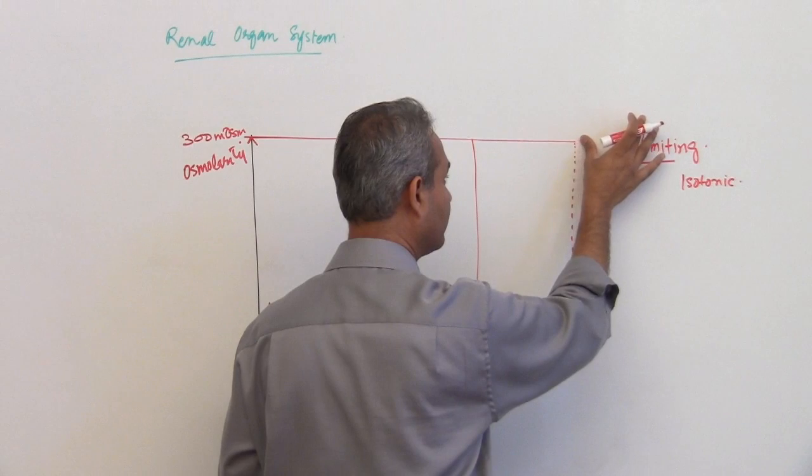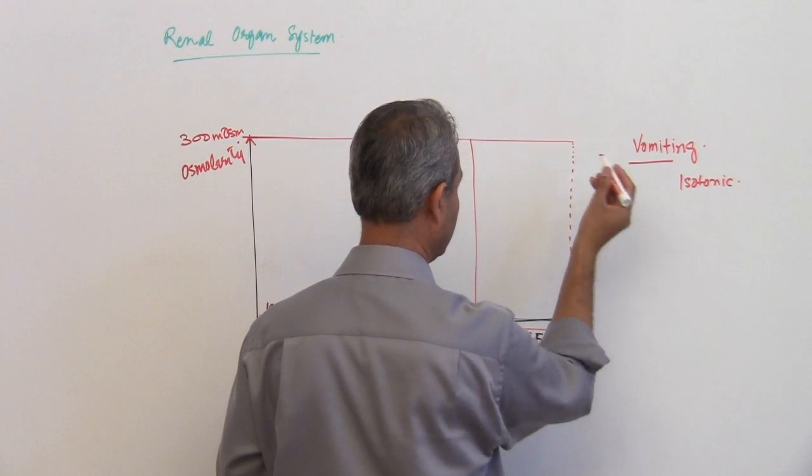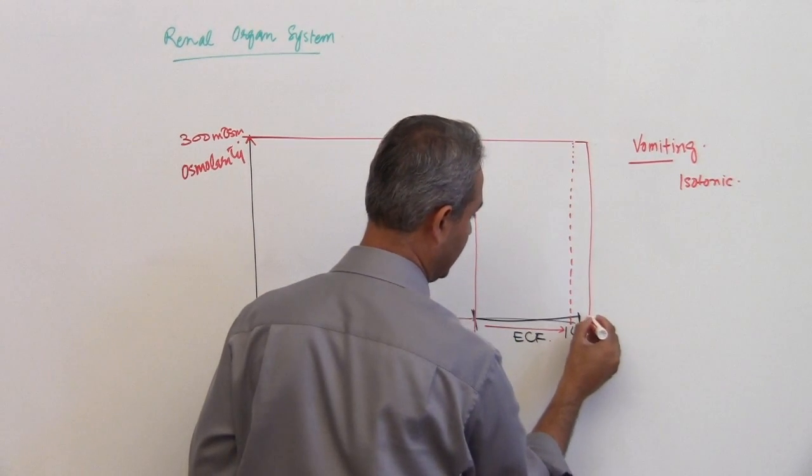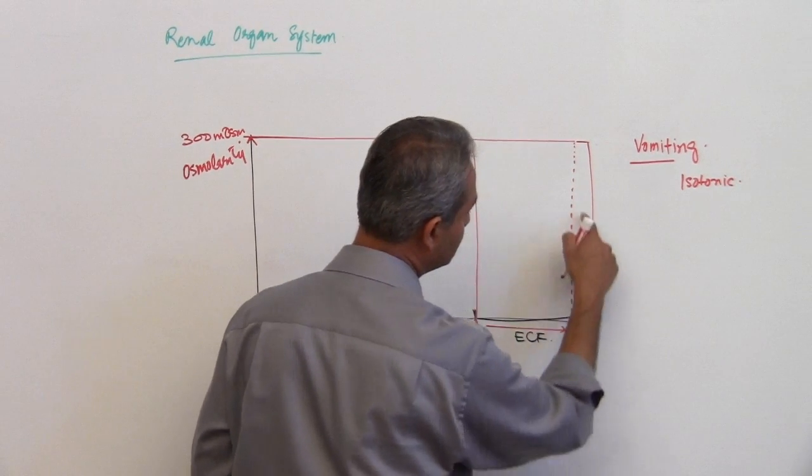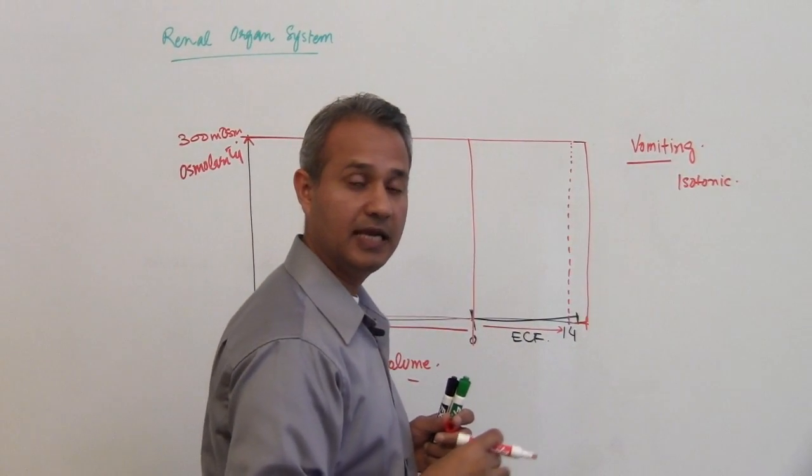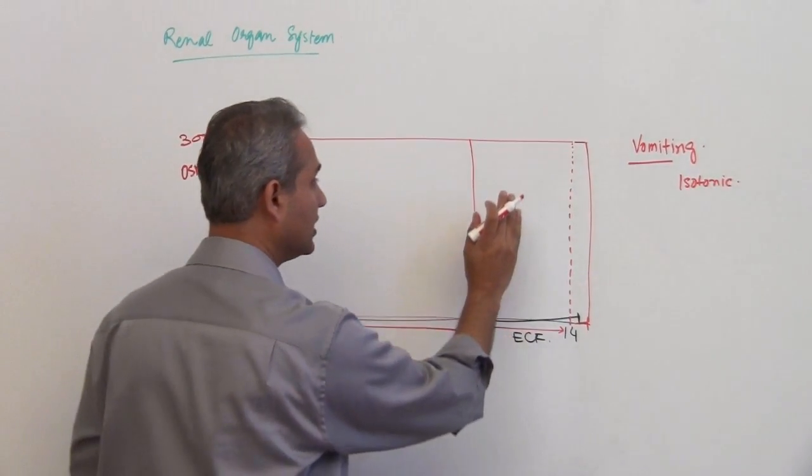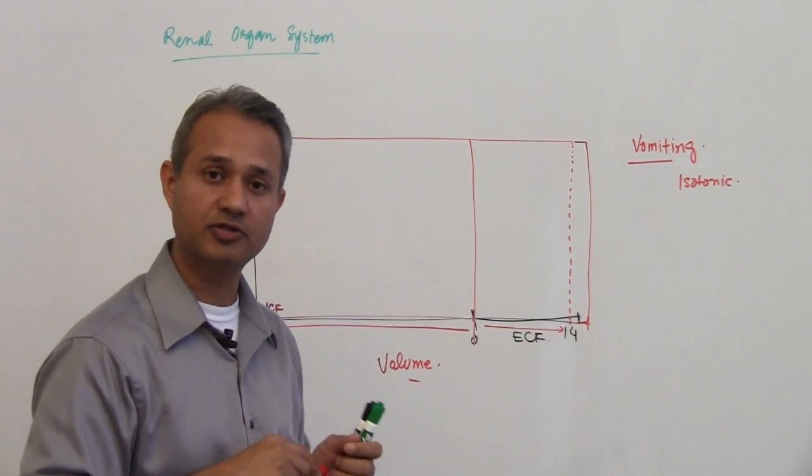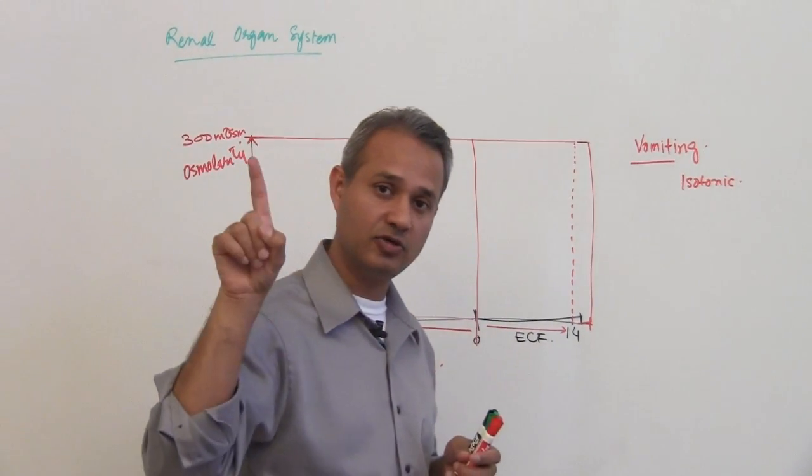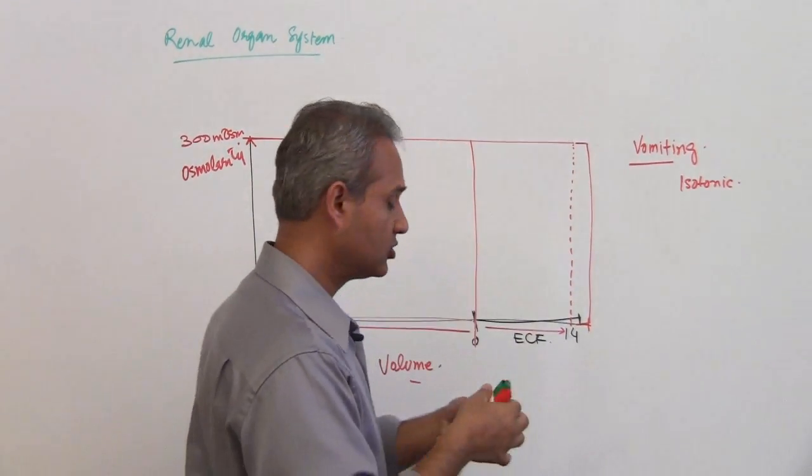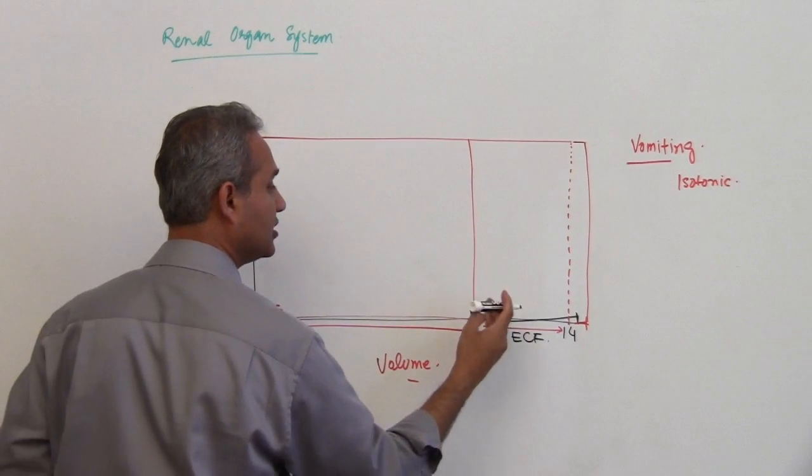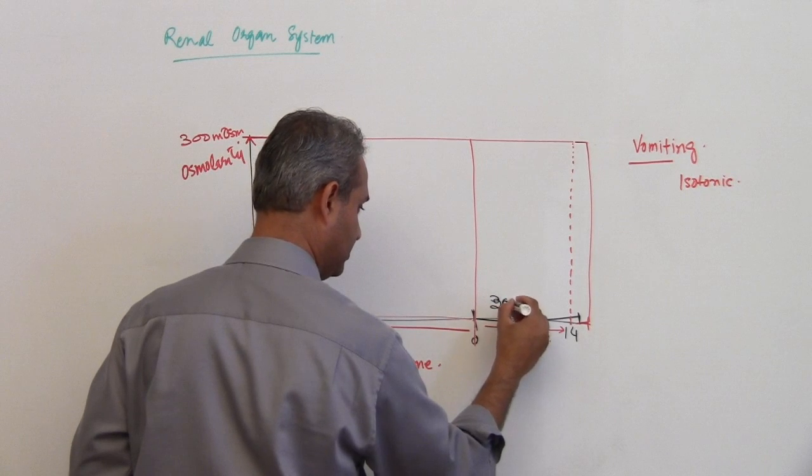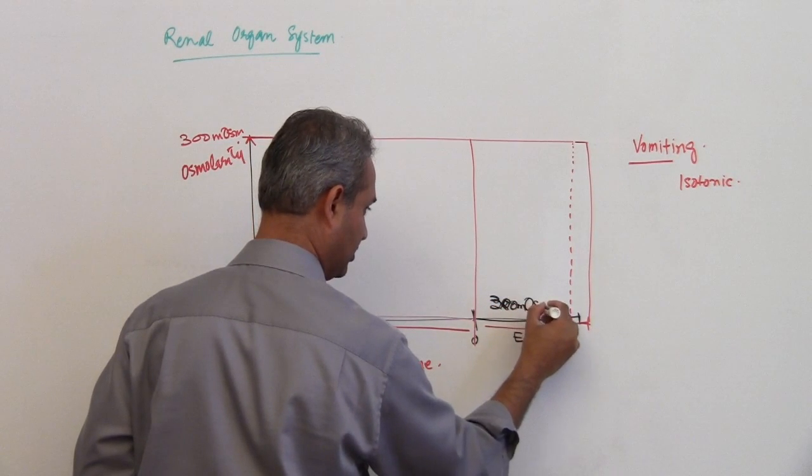So the fluid which got removed from the extracellular fluid, I will put that back actually just so that we can keep an eye. So the fluid which is removed is isotonic. So did anything happen to the concentration of the solutes? No, because what we lost is isotonic. So solute concentration is still the same. So the osmolarity here is still 280 milliosmoles or 300, we are using 300 in our example now. So 300 milliosmoles.